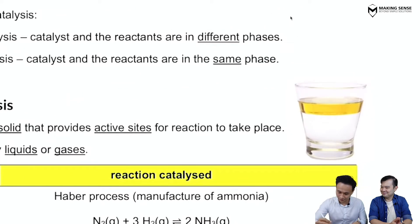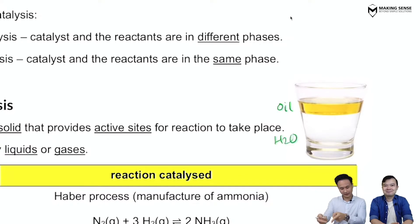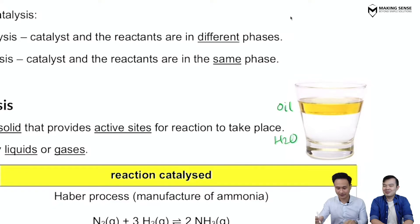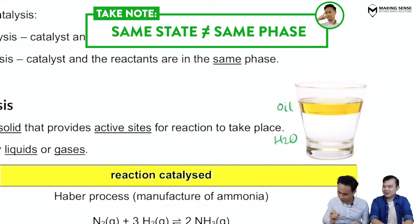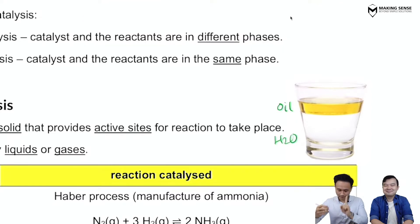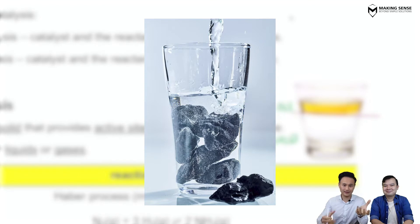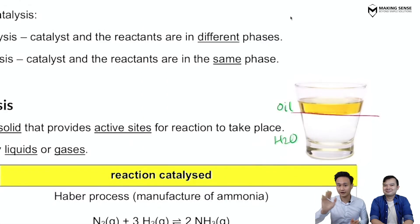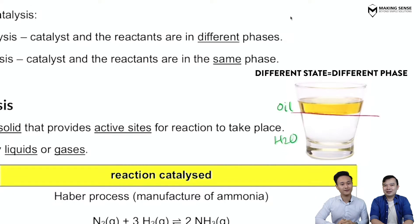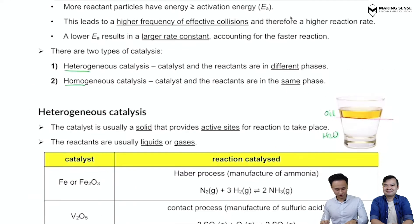For example, oil and water are both in the liquid state, but they are in different phases because they do not mix — they are immiscible. Conversely, if you have a solid rock and water, the states are different, so the phases are confirmed to be different as well.